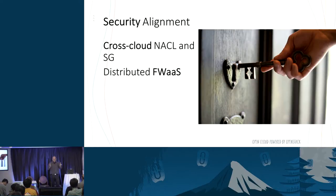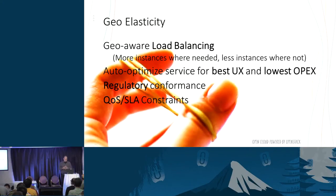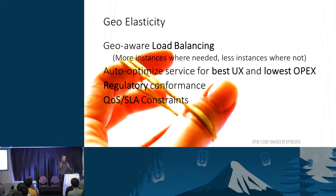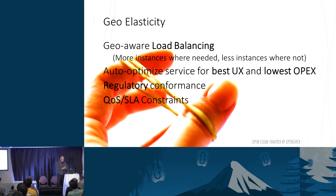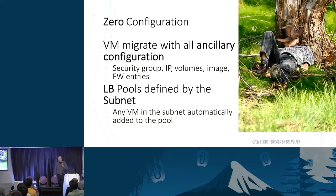You have to use the same security groups, otherwise when you're moving your VM from one place to another, things will stop working. Distributed firewall service. Geo-elasticity, which as my colleague said earlier is a fancy name for redundancy — you want geo load balancing with resources in the right place. If you have traffic coming in suddenly from North America, you want your resources in North America, not in APAC. You want to optimize automatically for the best user experience while keeping OpEx lowest, and maintain regulatory conformance and SLA constraints.